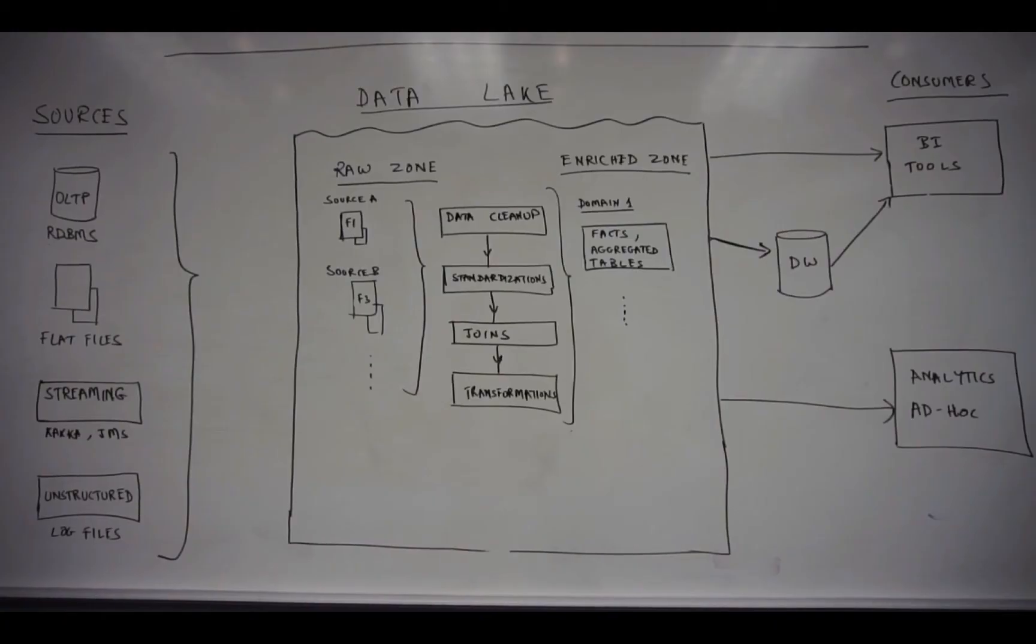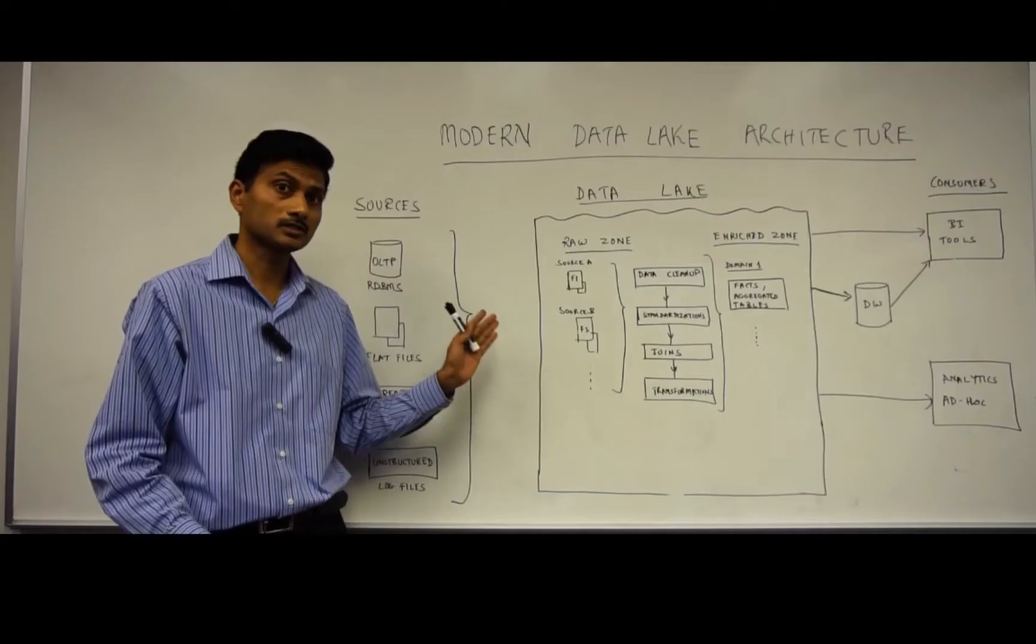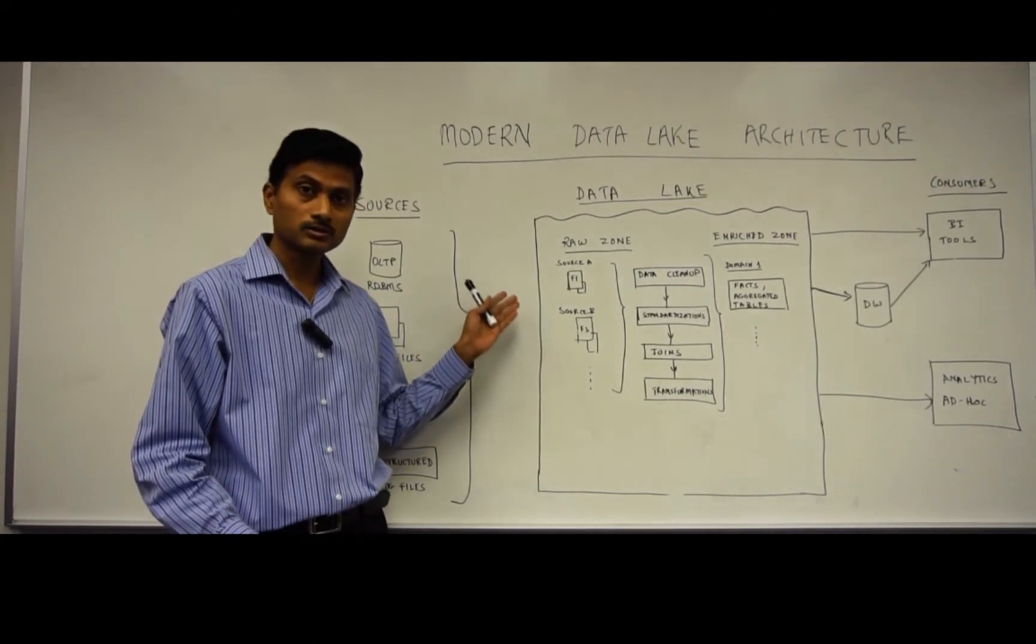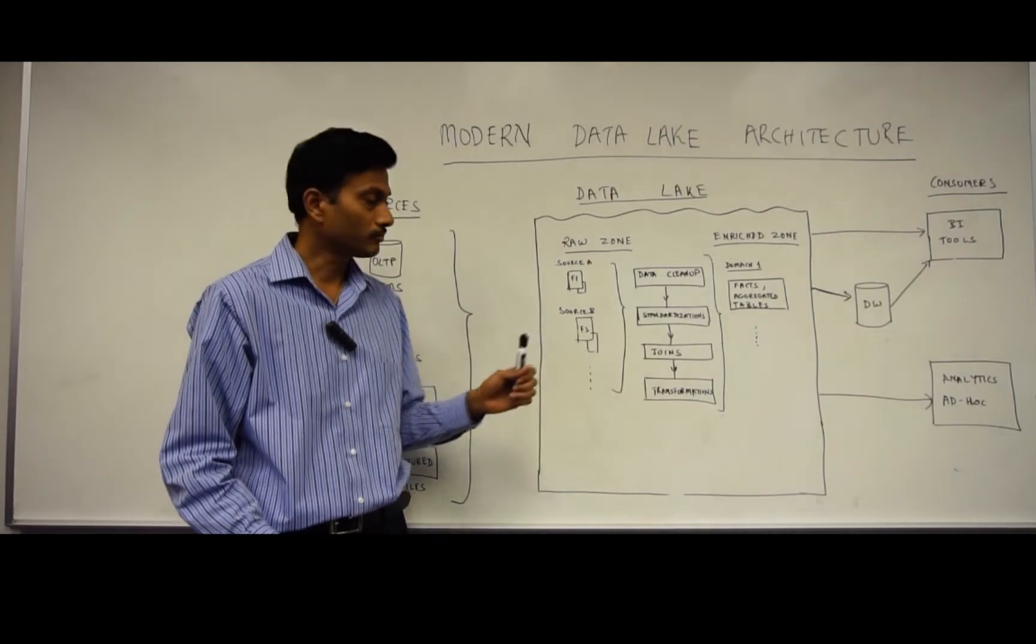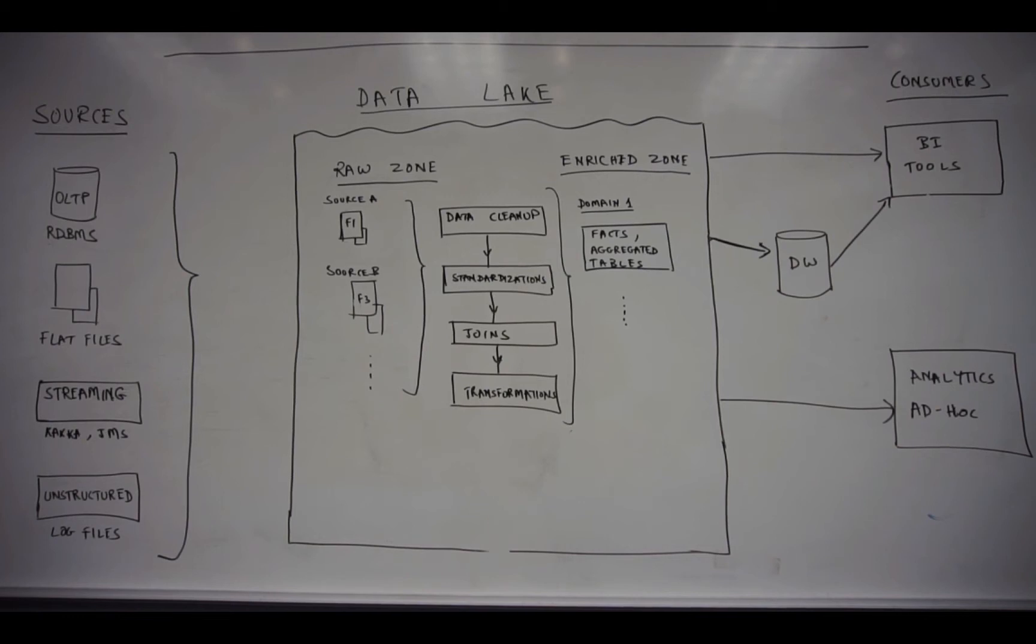Now, when you move towards the Data Lake, you'll notice that there's one box and it's got multiple partitions. What you'll see as a difference is we now got rid of the ETL server. The Data Lake handles both storage and compute for you. Within the Data Lake, data is first moved to a raw zone, where the data is as close to your original system, but organized by the sources.